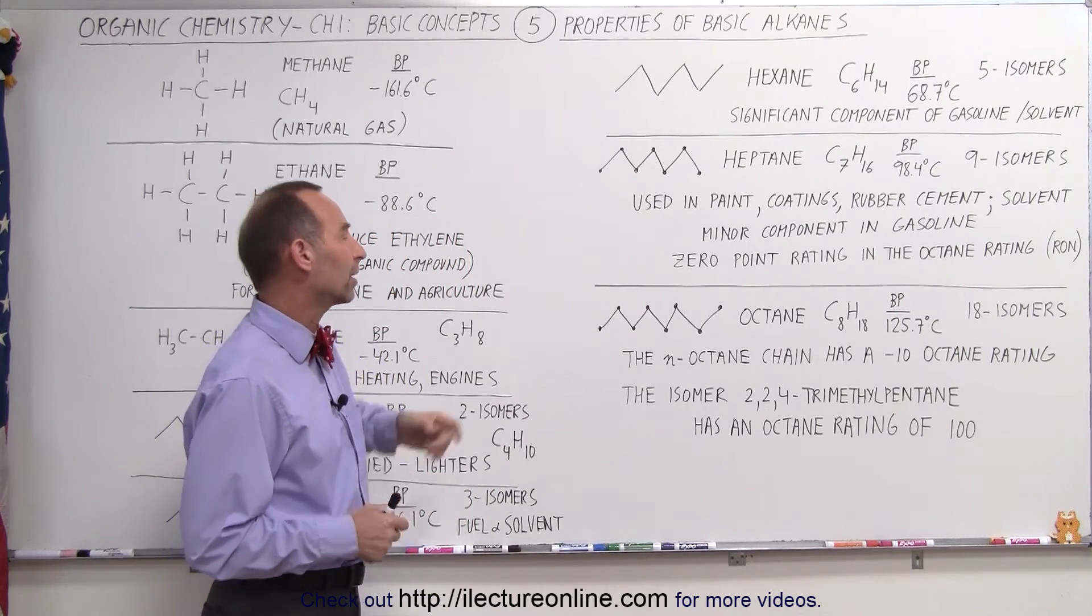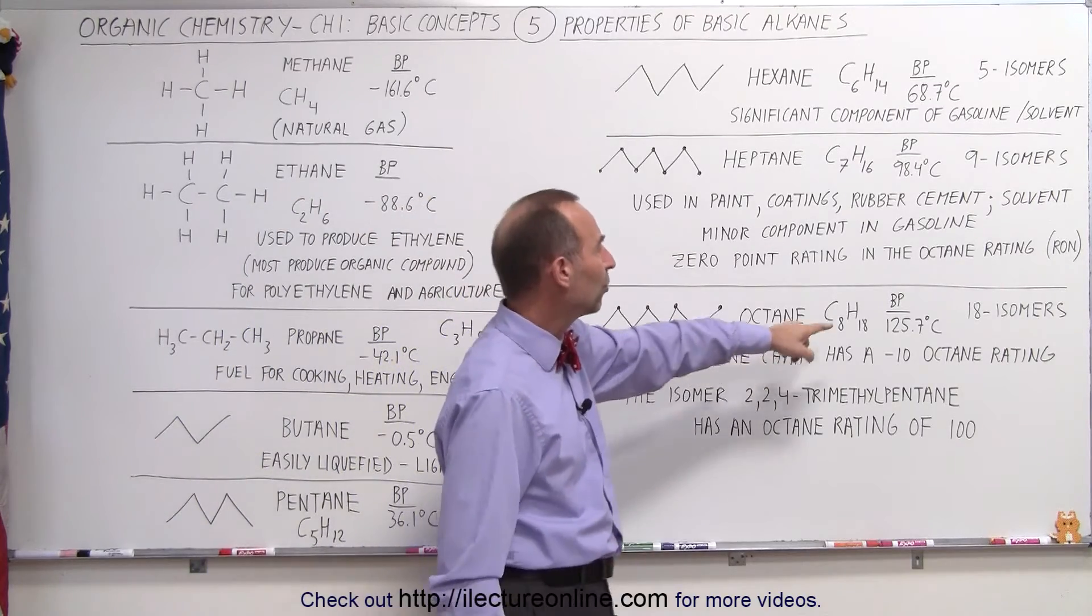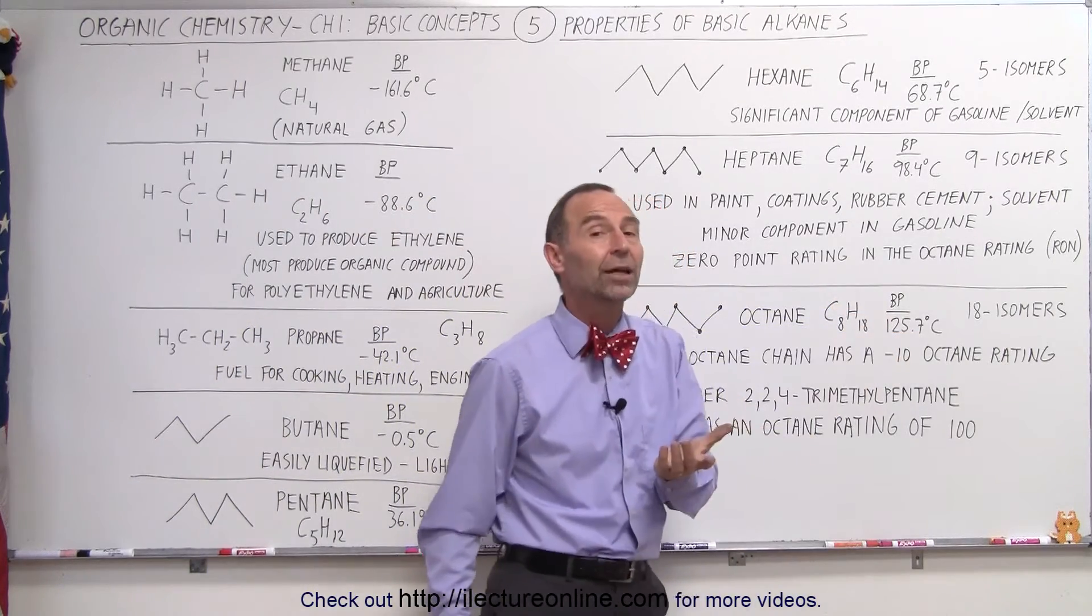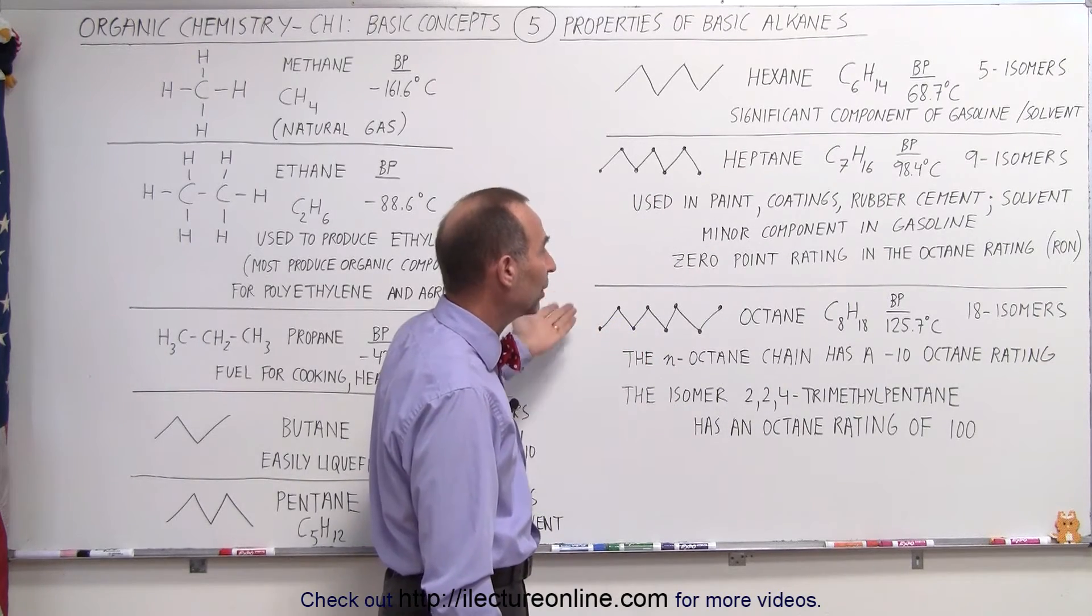Let's now jump to octane. Octane has eight carbons, 18 hydrogens. Notice the boiling point is 125.7 degrees centigrade which is quite high and yes octane is something that can be put into gasoline.